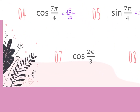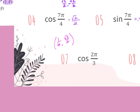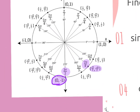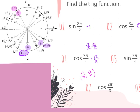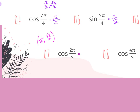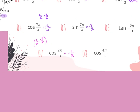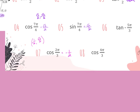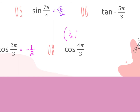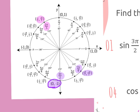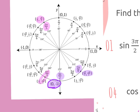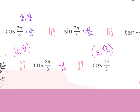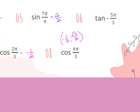Number 7: 2 pi over 3. The coordinate point at an over-3 is 1 half and root 3 over 2. 2 pi over 3 is in quadrant 2 — so signs are negative and positive. Cosine at 2 pi over 3 is negative 1 half. Number 8: 4 pi over 3. That's in quadrant 3 — signs are negative and negative. Cosine is negative 1 half.